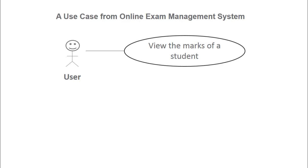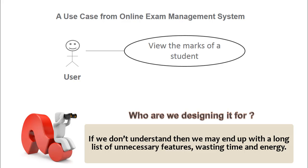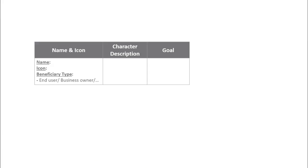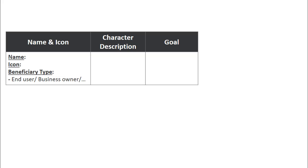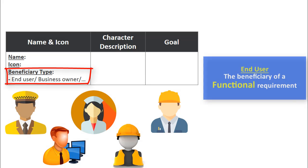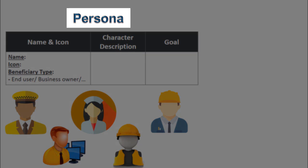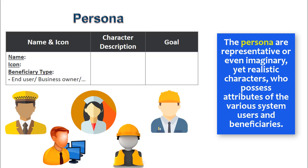Assume that an online exam management software is under development. The dev team is supposed to develop a use case where a user can view the marks of a student. The very first step here would be to understand who we are designing this solution for — the target end users or customers and what their needs are. If we don't understand this, we may end up with a long list of unnecessary features, wasting time and energy. Let us look at a template that captures all the essential attributes of the user. The first column captures the name, icon, and beneficiary type. For example, the beneficiary type of a functional requirement would be an end user, whereas the beneficiary of a non-functional requirement could be the business owner. These created characters are called personas.